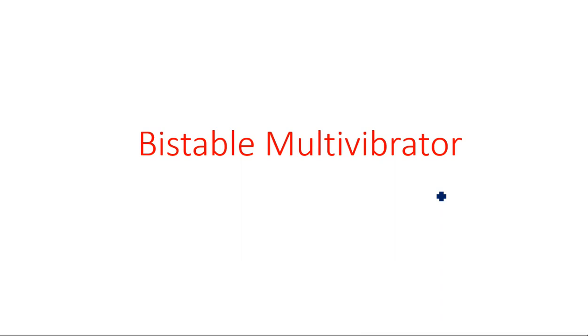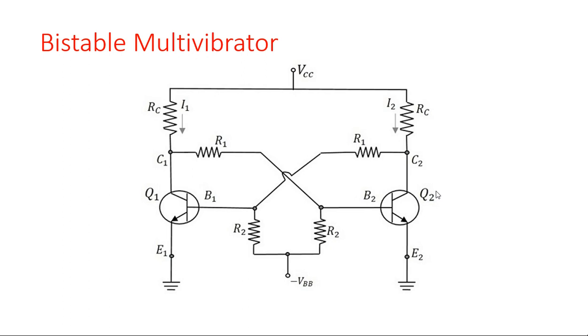In this video I am going to explain the characteristics and required features of the fixed bias bistable multivibrator. In the previous video we started the discussion of this bistable multivibrator with the fixed bias configuration. There are two configurations: fixed bias and self-biased. For the collector coupled bistable multivibrator with fixed bias, we have two transistors connected where the collectors are coupled.